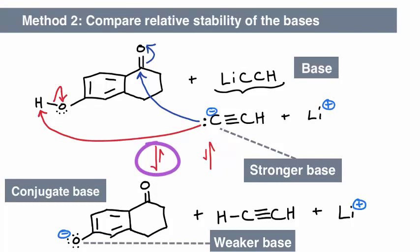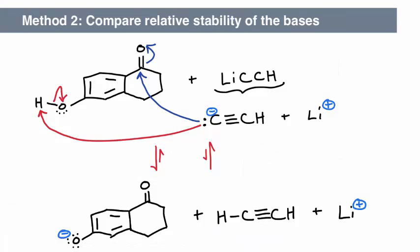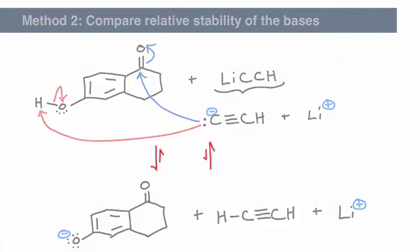This is the same conclusion that we came to by using method 1, and it should be. If we had come to a different conclusion using the two methods, we've done something incorrect in our analysis. Both these analyses bring us to the conclusion that the acid-base step occurs first in the mechanism.